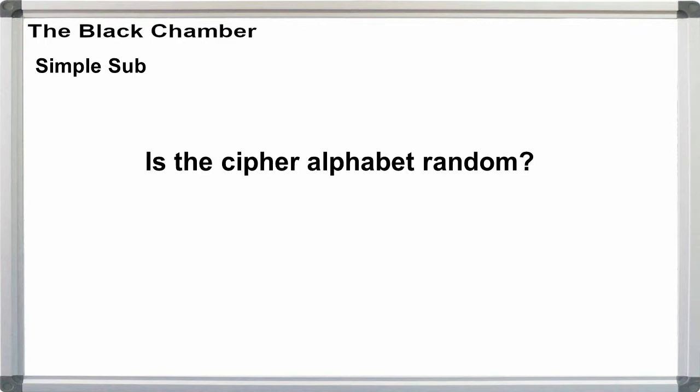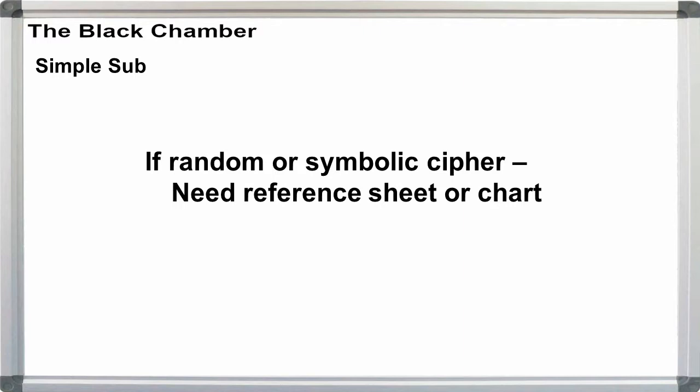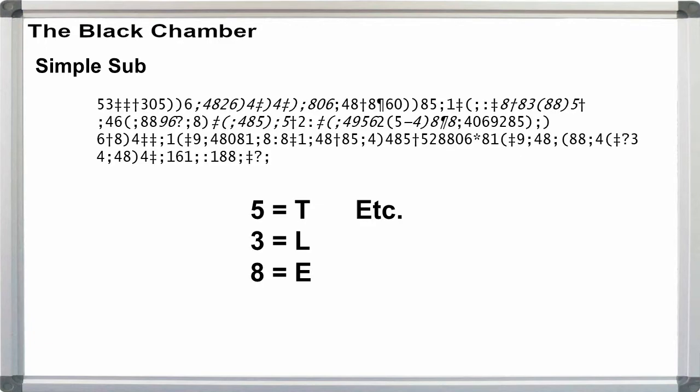Decryption. The ease or difficulty of simple substitution decryption is going to lie primarily with whether you have a keyed alphabet. If the alphabet is random, or if you have a symbolic cipher, then you'll need some kind of reference sheet or chart showing the symbol-letter relationships.